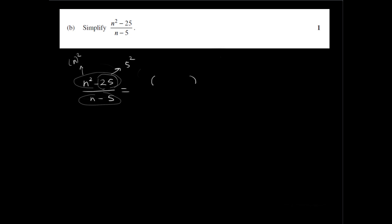Difference of squares can be factorized as the product of conjugates. So n times n is n squared. And 5 times 5 is 25. And 1 is a plus, the other is a minus. Hence conjugates over n minus 5. There isn't much we can do with n minus 5. We can't factorize it, so we leave it as it is. And cancel where possible. So this cancels with that. And our answer is n plus 5 multiplied by 1 is n plus 5 over 1, or just n plus 5.